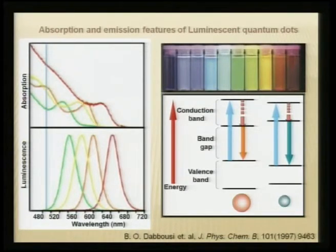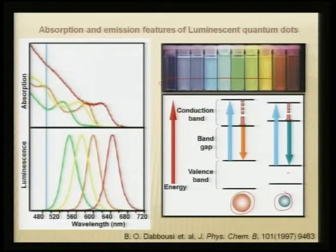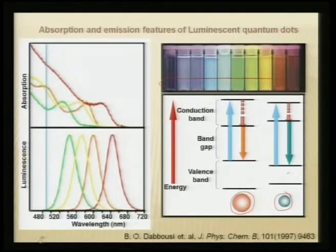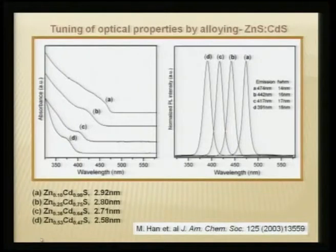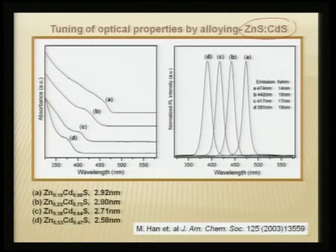You can modulate the band gap by controlling size to get a wide spectrum of specific colors using quantum confinement. Another important approach is alloying — for example zinc sulfide and cadmium sulfide. This is not a quantum confinement issue but an alloying effect in phosphorescence: you take zinc sulfide, add a low band gap sulfide, and observe changes in the optical properties.